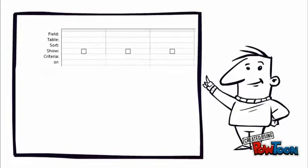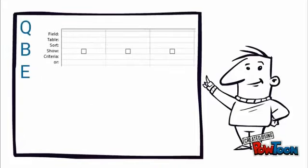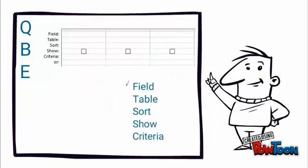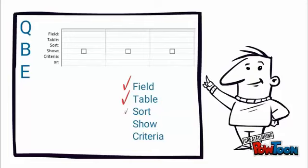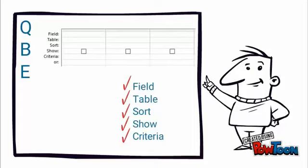The second element will be our QBE grid, composed of the following elements: the fields, the tables, sort — ascending or descending — show, and criteria, the most important element in today's session.